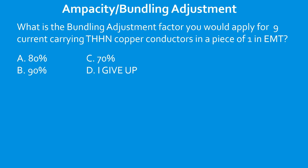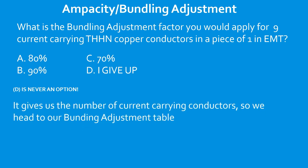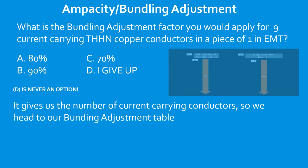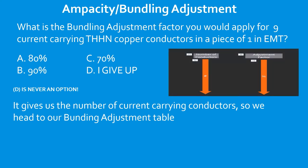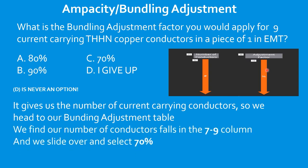Question: What is the bundling adjustment factor you would apply for nine current-carrying THHN copper conductors in a piece of one-inch EMT? Go to the bundling adjustment table, start on the left with the number of conductors. Nine falls in the seven-to-nine range. Come over and select the adjustment factor — 70%, which is 0.70. Select C.